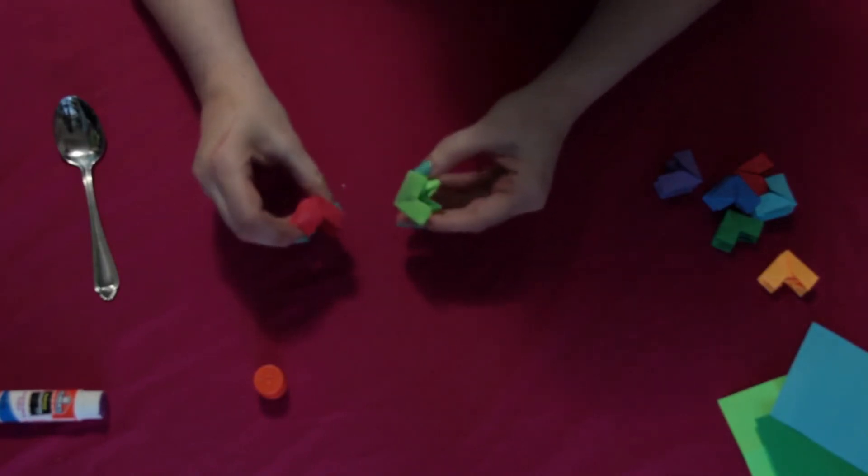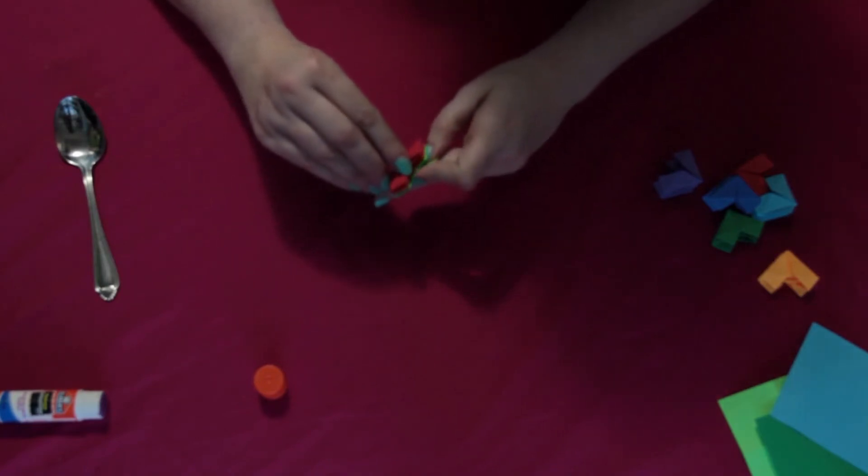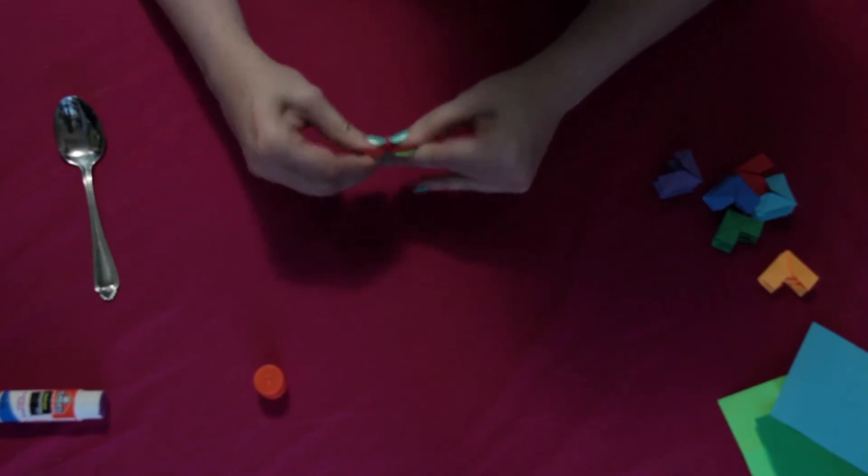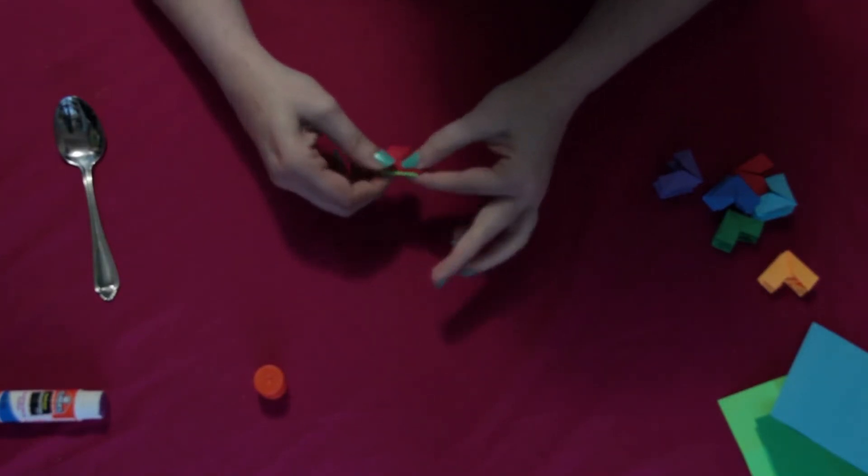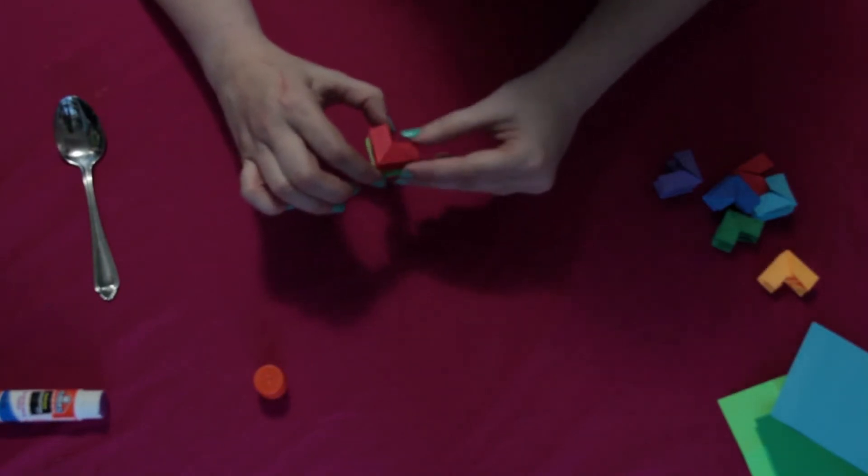So when you've got glue on both sides, you're going to touch the two faces of the heart together. And just make sure they line up. And give it a good squish. And just hold it in place. And put it aside for a little while to dry.